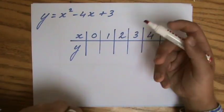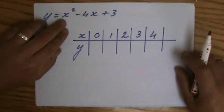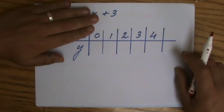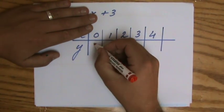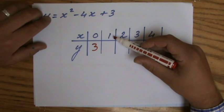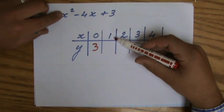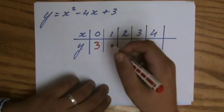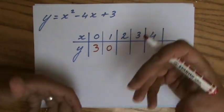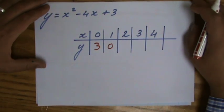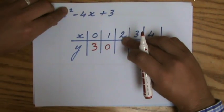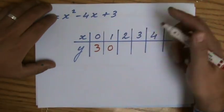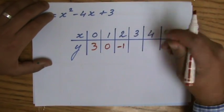When x is 0, let's find out how much is y. That is 0 squared, which is 0, minus 4 times 0, which is 0, plus 3. So y is going to be 3. When x is 1, I'm going to get 1 squared, so 1 minus 4, which is minus 3, plus 3, that is going to be 0. Make sure you're able to find those values yourself as well. 2 squared is 4, minus 8 is minus 4, plus 3 is minus 1. Please check if you get that.